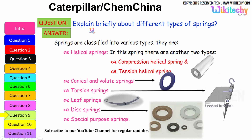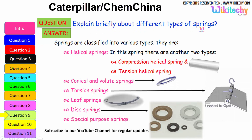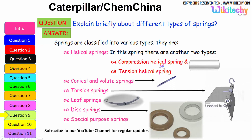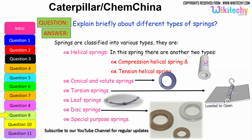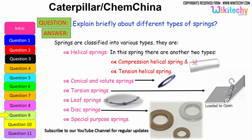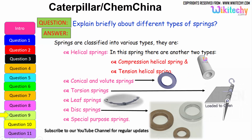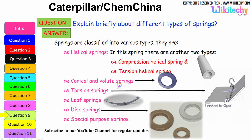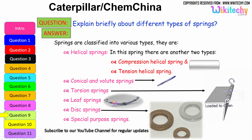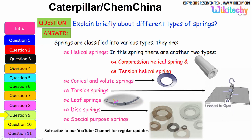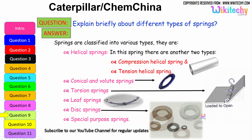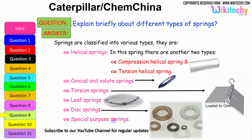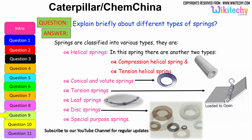Now, let us see briefly about the different types of springs. Springs are classified into various types: helical springs — which include compression helical springs and tension helical springs — conical volume springs, torsion springs, leaf springs, disk springs, and special purpose springs. These are all the different types of springs available.